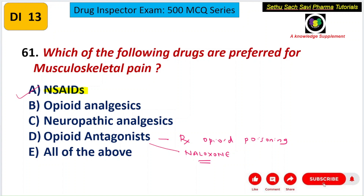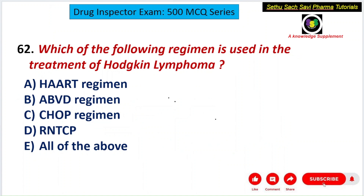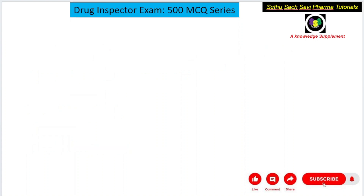Moving on to the second question: which of the following regimens is used in the treatment of Hodgkin lymphoma? A) HAART regimen, B) ABVD regimen, C) CHOP regimen, D) RNTCP, E) All of the above.